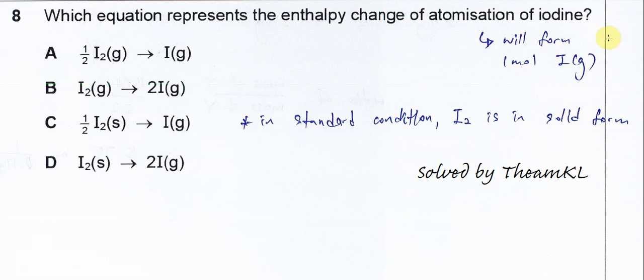For atomization of iodine, you need to understand it always forms one mole. One mole of iodine gas atoms will form. Therefore, B and D are eliminated because they form two moles.